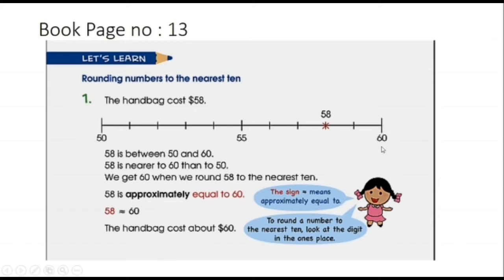And you can also see that the gap between 58 and 60 is only of two numbers, and here the gap between 50 and 58 is of 8 numbers. So you can say that 58 is more nearer to 60 than to 50. That's why we will round it off to 60.